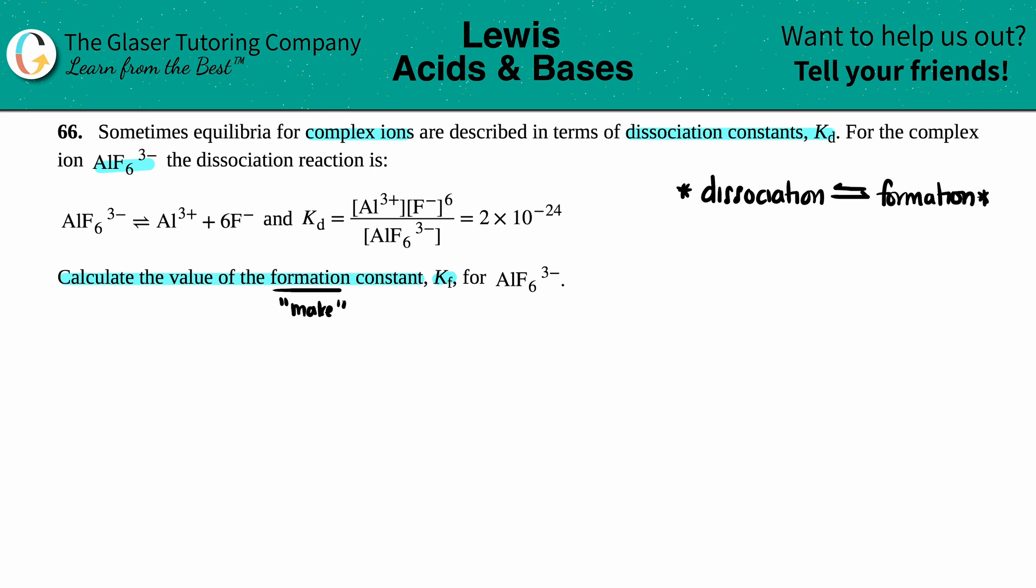If we wanted to write the balanced equation for the formation reaction for this complex ion, we would form it from its ions. So it's literally the products of the dissociation: Al^3+ + 6F^- at equilibrium with AlF6^3-.